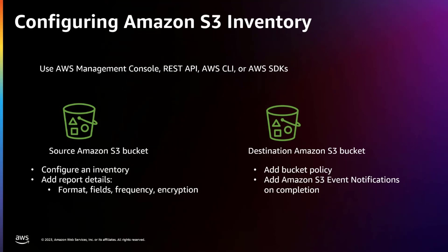The bucket where the inventory list file is stored is called the destination bucket. Amazon S3 inventory list files are written to the destination bucket, and you can specify a destination prefix to group all inventory list files in a common location. The destination bucket contains the inventory file list and the manifest files that list all inventory files stored there. Your destination bucket must have a bucket policy to give Amazon S3 permissions to write files to the bucket. It must be in the same AWS region as the source bucket, but it can be owned by a different AWS account.